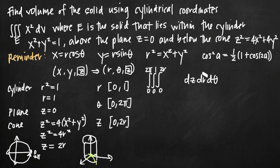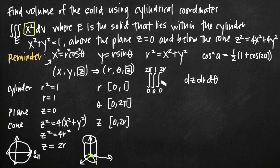We've been given x squared as the integrand, and we need to convert that to cylindrical coordinates. Squaring both sides of the conversion formula x equals r cosine theta, we get x squared equals r squared cosine squared theta. However, whenever you convert from Cartesian to cylindrical coordinates, you must multiply by an additional r. So instead of just r squared cosine squared theta, we get r cubed cosine squared theta as the function we're integrating.